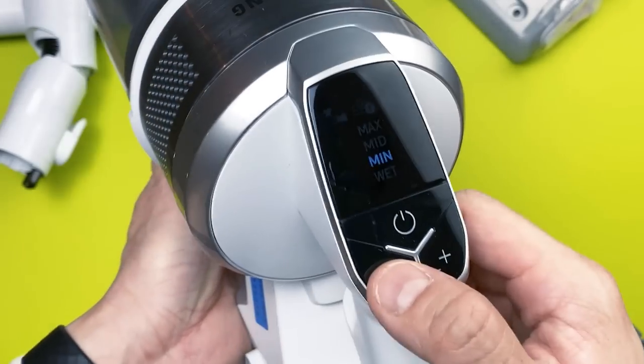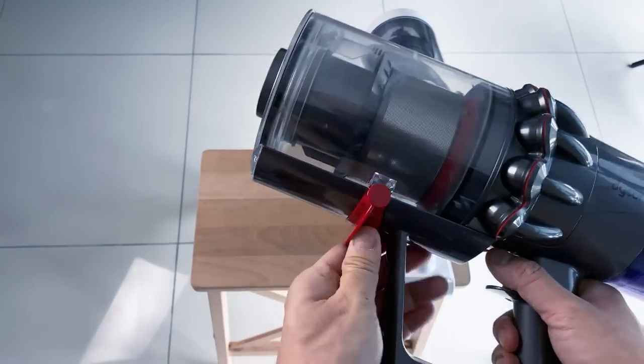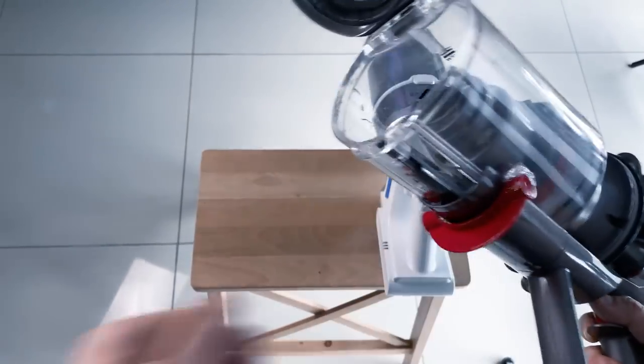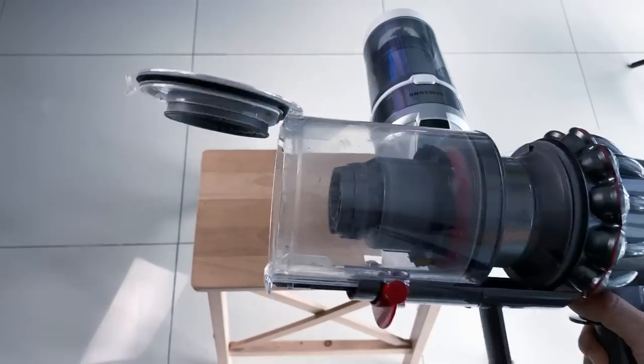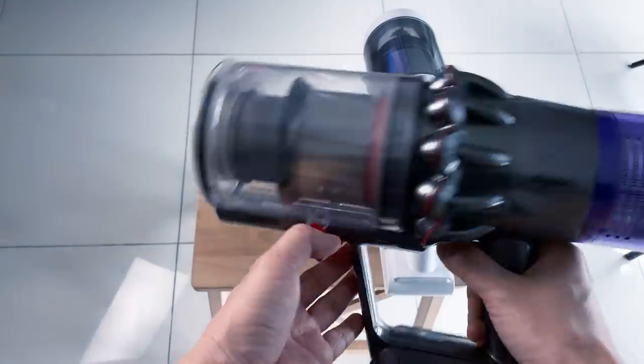In terms of disposing of dust and dirt from the bin, Dyson's point-and-shoot mechanism is unique and easy. Simply point the canister towards your garbage bin and pull out the lever. This bagless design is convenient. However, it does run the risk of dust cloud.